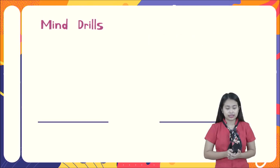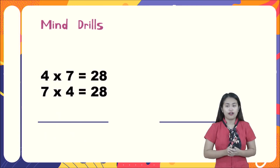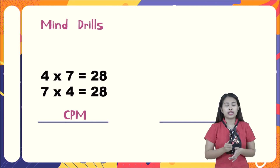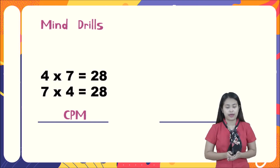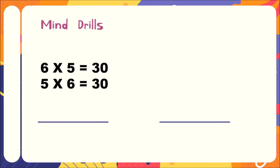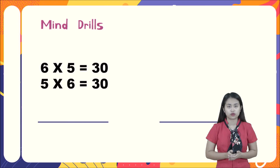Grade two, kindly get your book and let us answer these mind drills. Number one: four times seven equals 28 and seven times four equals 28 — that is CPM, commutative property of multiplication, because regardless of the positions of the factors we have the same product. Number two: eight times one equals eight — one is evident, so that is IPM, identity property of multiplication. Number three: six times five equals 30 and five times six equals 30 — the factors change positions, so that is CPM.